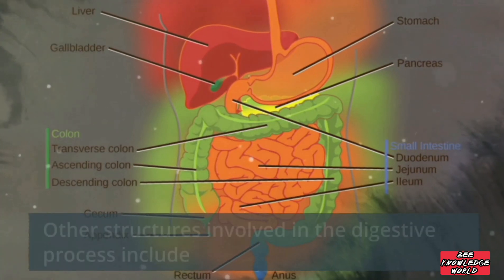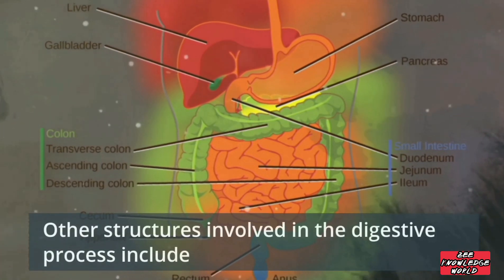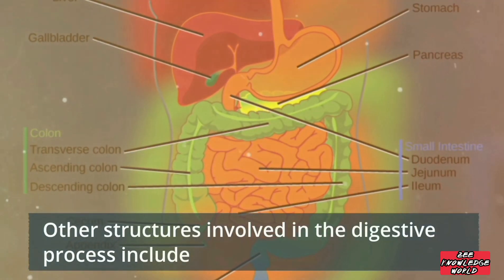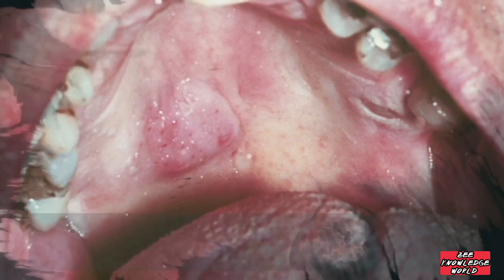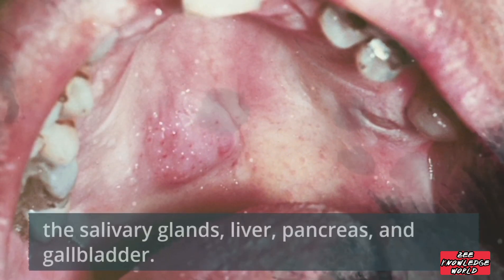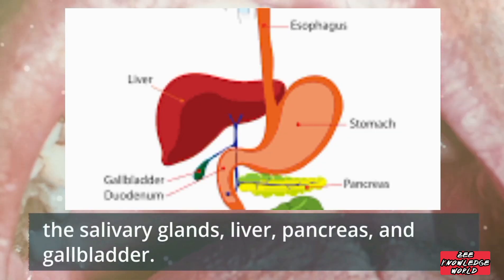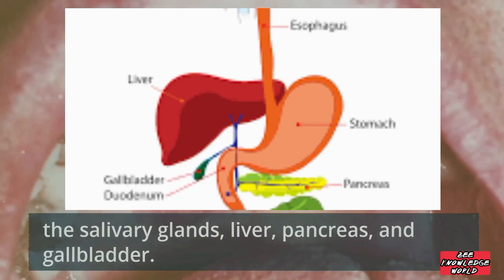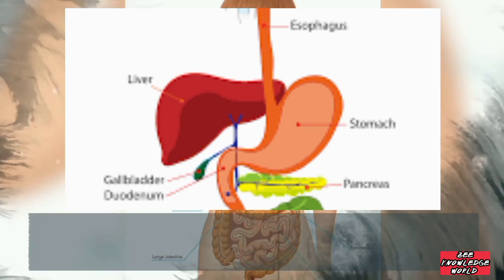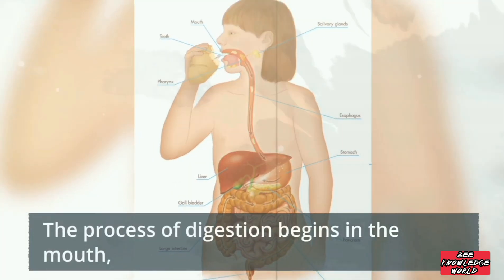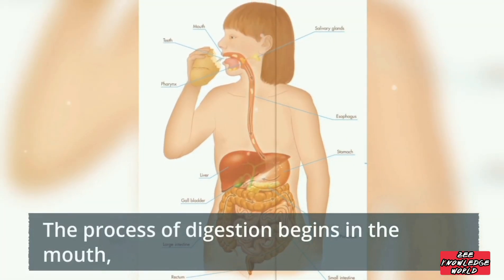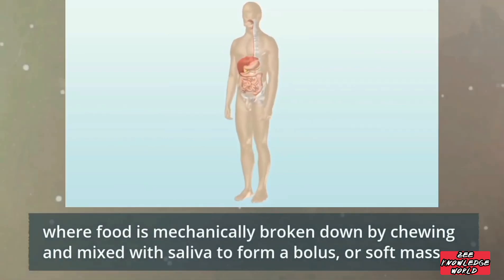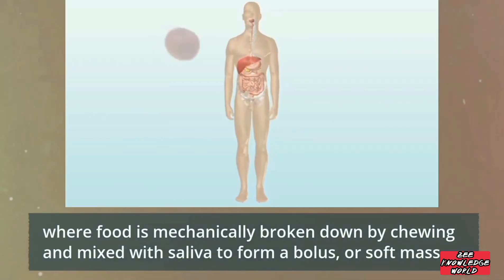Other structures involved in the digestive process include the salivary glands, liver, pancreas, and gallbladder. The process of digestion begins in the mouth, where food is mechanically broken down by chewing and mixed with saliva to form a bolus, or soft mass.